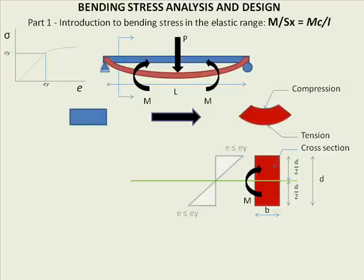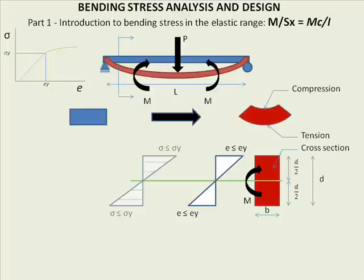We draw a strain diagram showing ε ≤ εy, which means we are within the elastic range. The top part shows maximum compressive strains and the bottom shows maximum tensile strains, with a linear change in between. At some point the strain is zero — that is experimentally verifiable: within the elastic range there is a linear transition from tension to compression. Similarly, within the elastic range there is a linear relationship between stress and strain, so the stress diagram takes the same shape as the strain diagram.